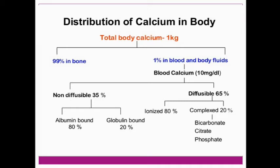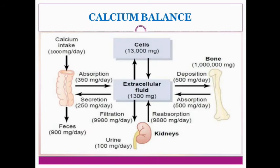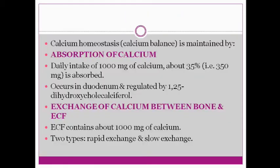The next topic is calcium balance or calcium homeostasis. This balance is maintained by three mechanisms: first is absorption, second is exchange of calcium between your bone and your extracellular fluid, and the third is excretion — either through fecal matter or through urine.